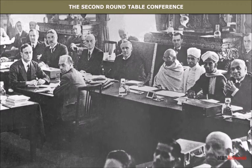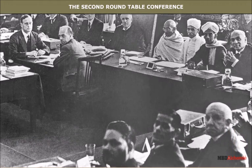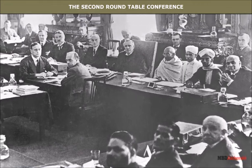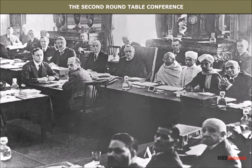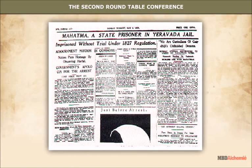The Second Round Table Conference: The Second Round Table Conference was announced to be held in London on September 7th, 1931. The Congress agreed to participate, and Gandhiji represented the Congress at the conference, but the negotiations broke down and he returned disappointed. After his return from London, Gandhiji was arrested. The British government revived its old repressive measures, Congress offices were sealed, and the Congress Working Committee was declared an unlawful organization.